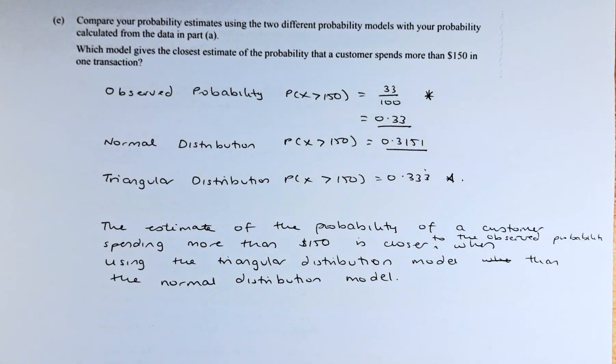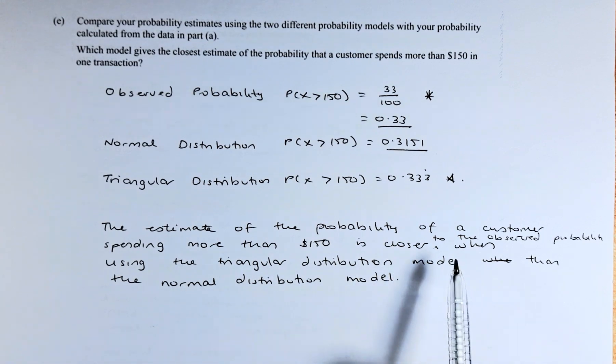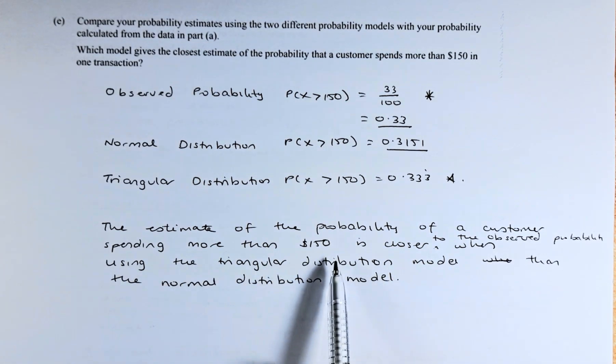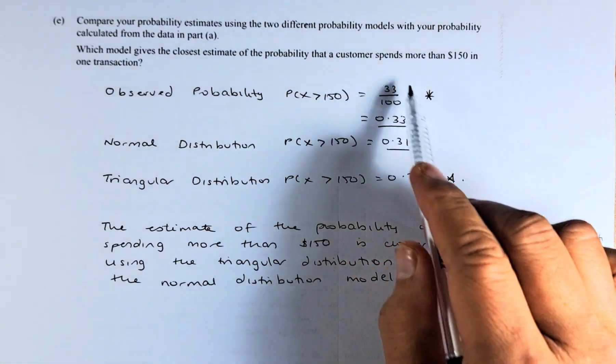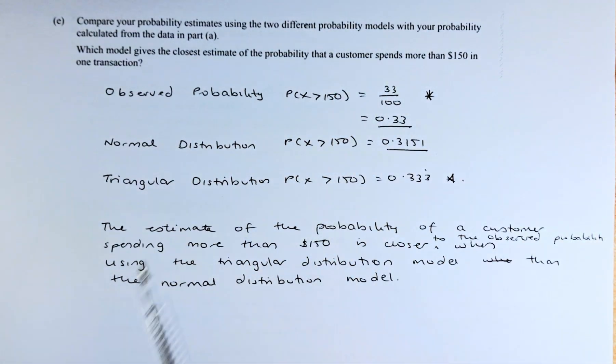So to answer that question, very simple. The estimate of the probability of a customer spending more than $150 is closer to the observed probability. Which number is closer to 33 over 100? It has to be the triangular distribution.